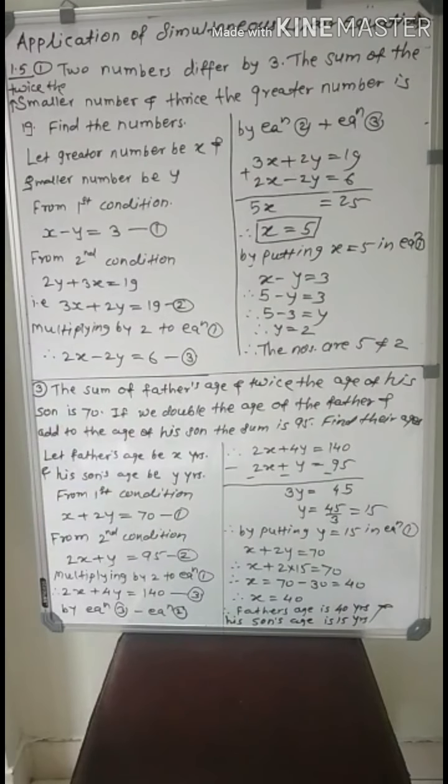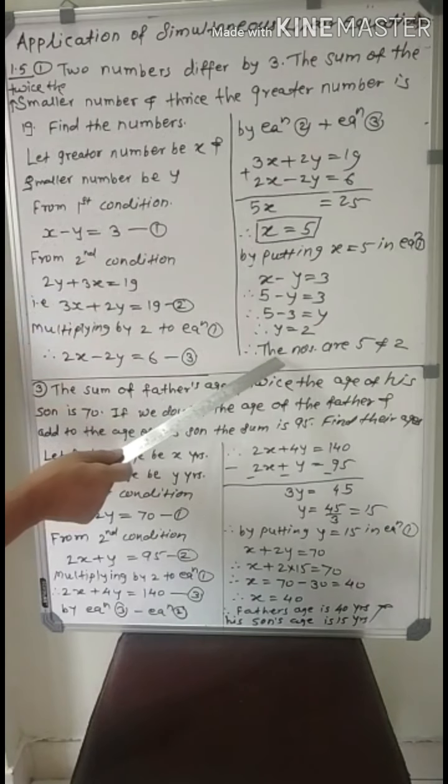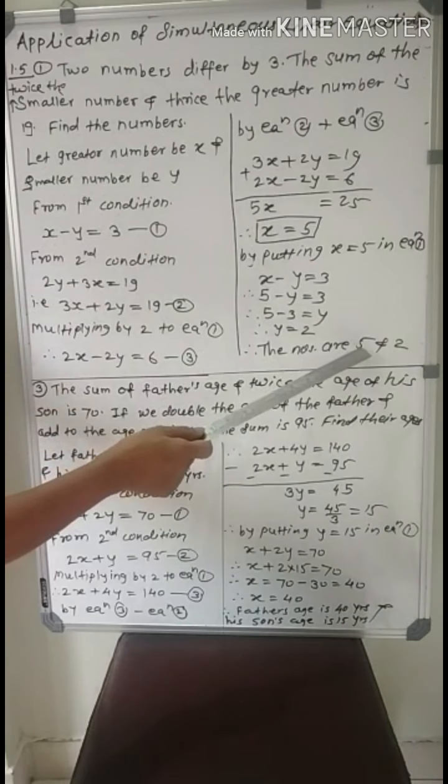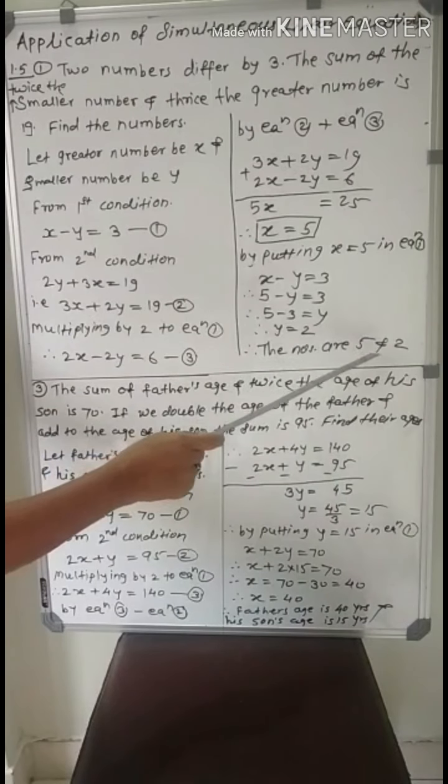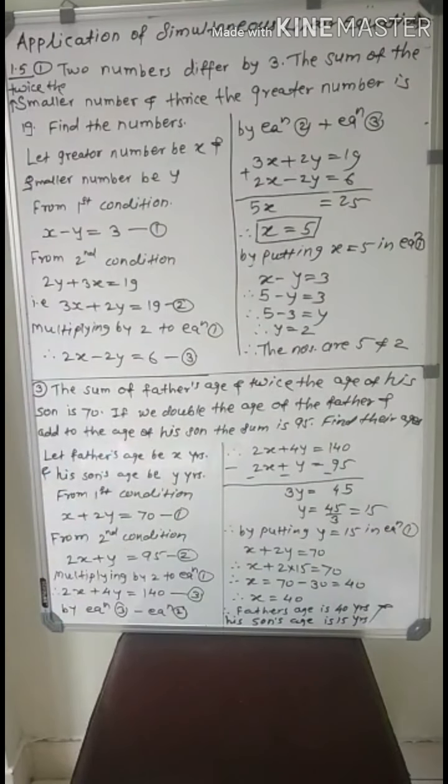Generally we write answer like (x, y) equals (5, 2). But here the question is find the numbers, so write the answer like this: the numbers are 5 and 2. Similarly, some other questions are there.